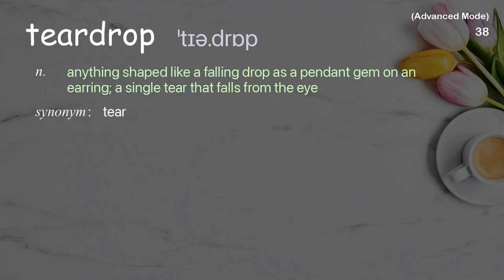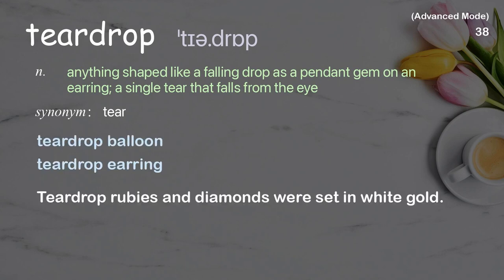Teardrop: anything shaped like a falling drop, as a pendant gem on an earring, or a single tear that falls from the eye. Examples: teardrop balloon, teardrop earring. Teardrop rubies and diamonds were set in white gold.